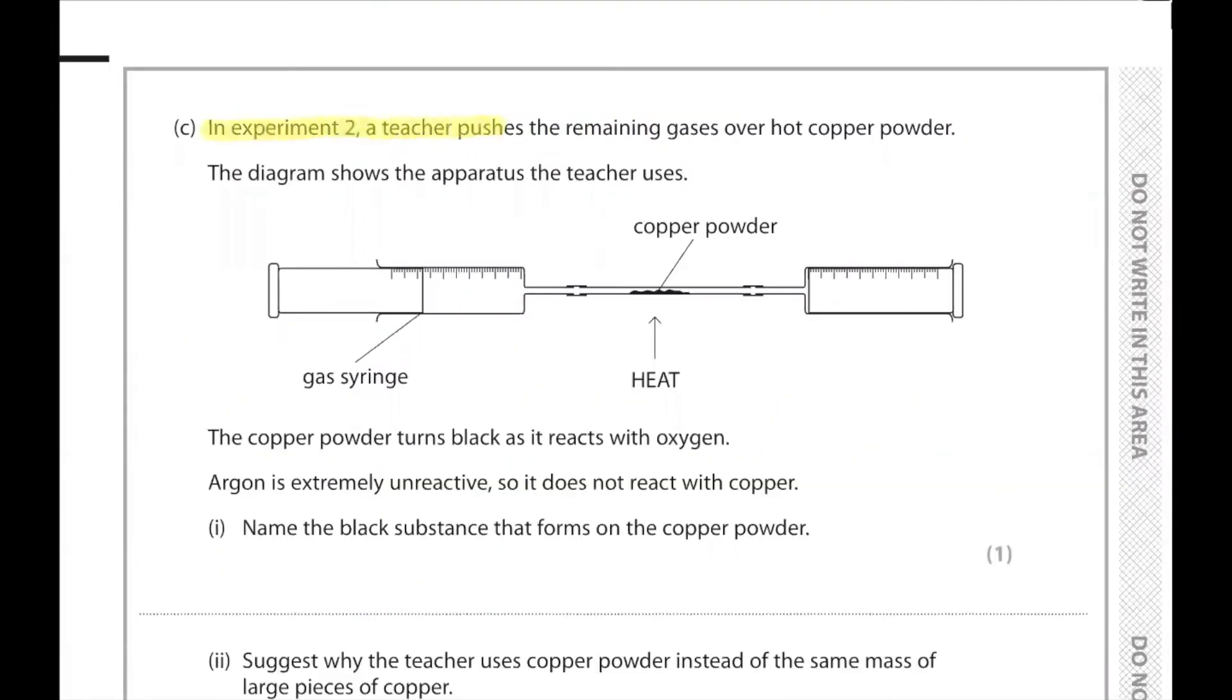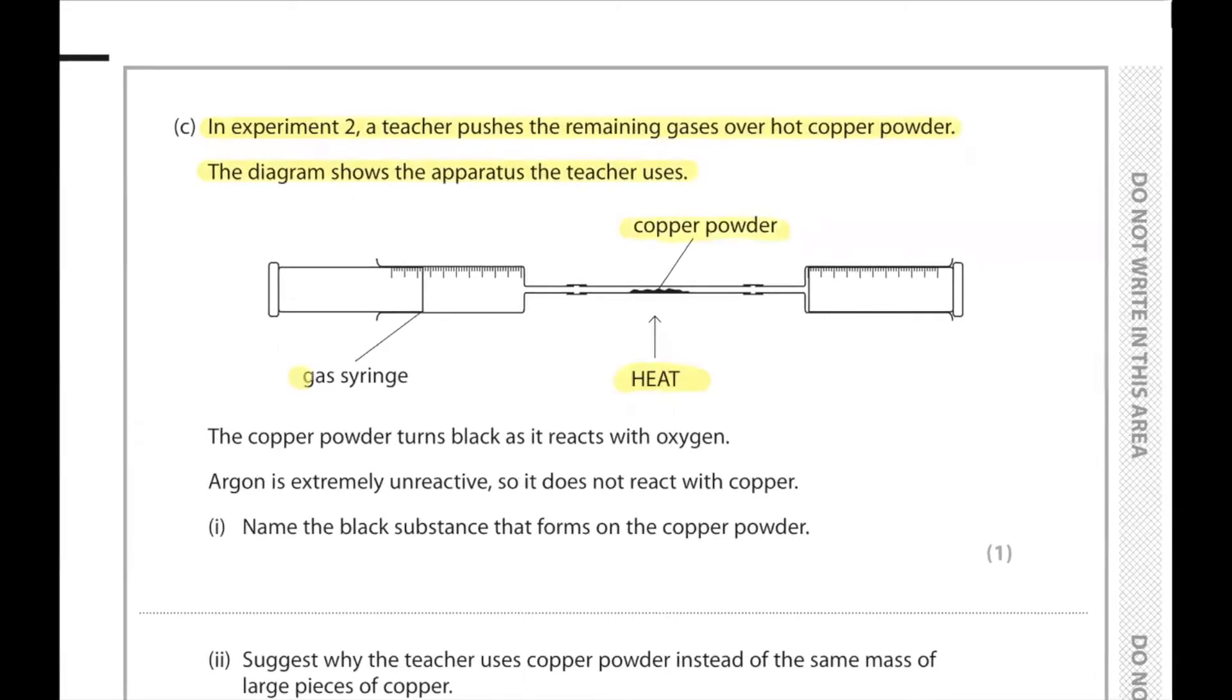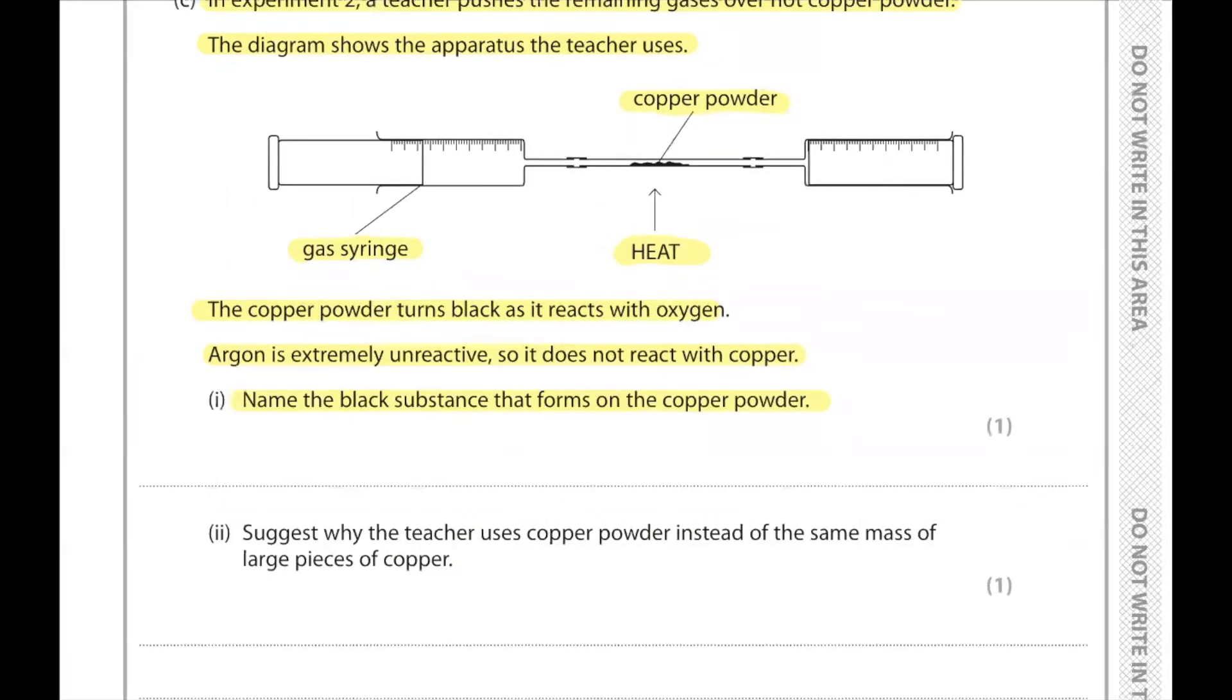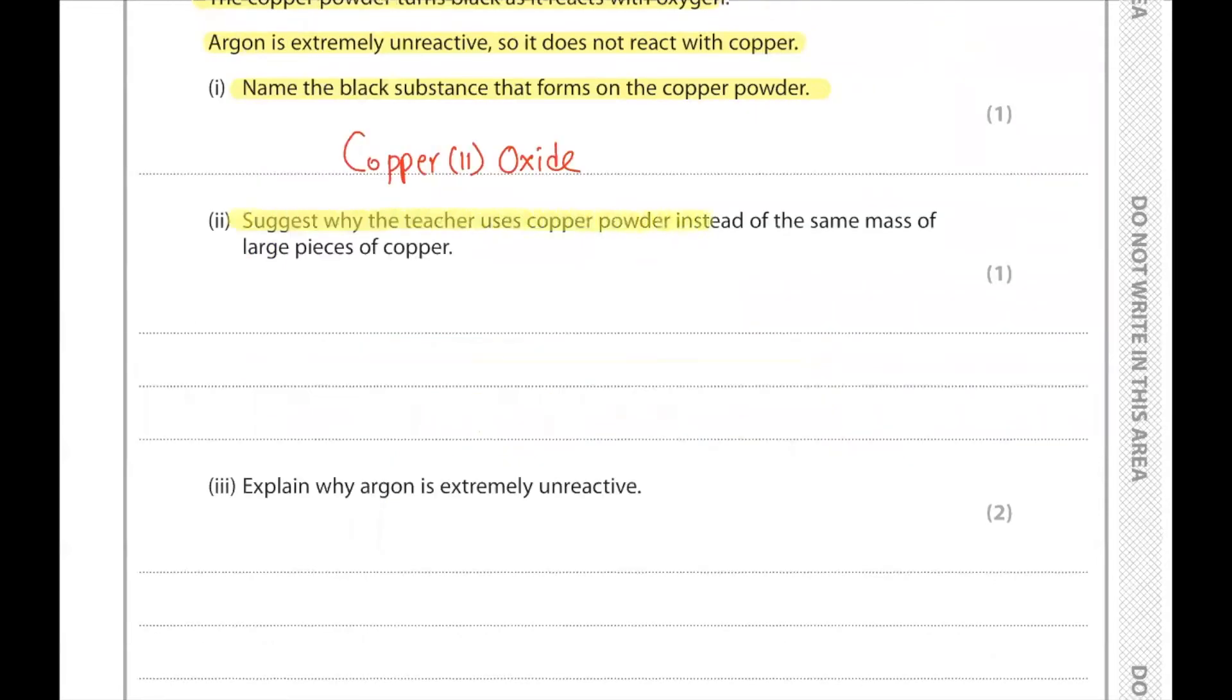In experiment 2, a teacher pushes the remaining gases over hot copper powder. The diagram shows the apparatus with copper powder, heat, and gas syringe. The copper powder turns black as it reacts with oxygen. Argon is extremely unreactive so it does not react with copper. Name the black substance that forms on copper powder. When copper reacts with oxygen in the air, it tends to form copper(II) oxide, which is black in color.